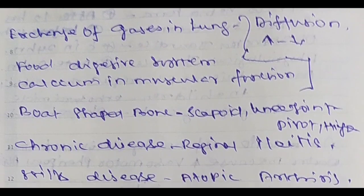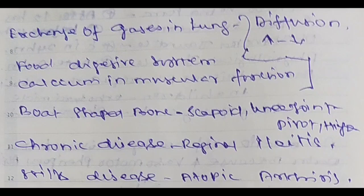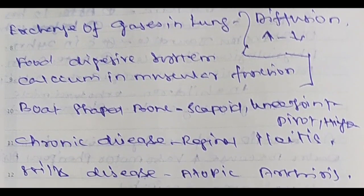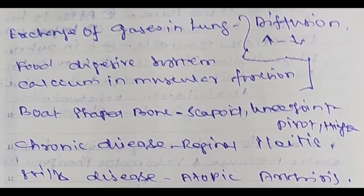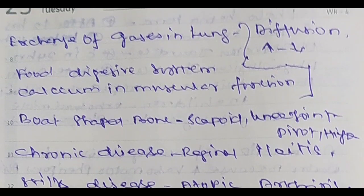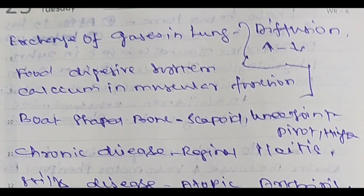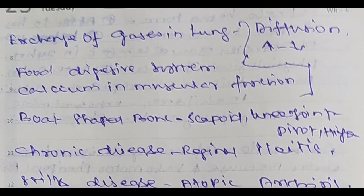This is the brain part — that's the functions. Then pH level: acidosis, alkalosis. Let's go and see. Then food digestion system. Calcium in muscular function. Exchange of gases in lungs, food digestion system, calcium in muscular function — all of this is the diffusion method.